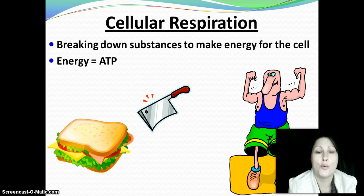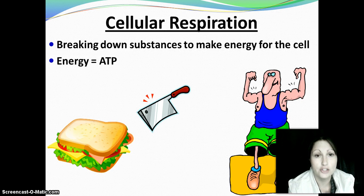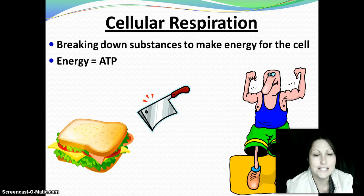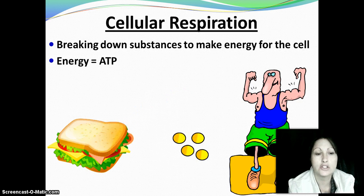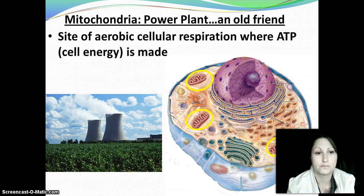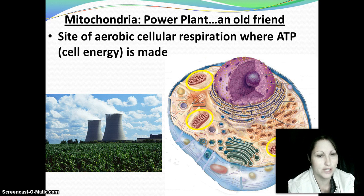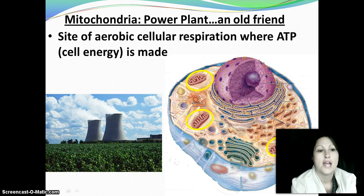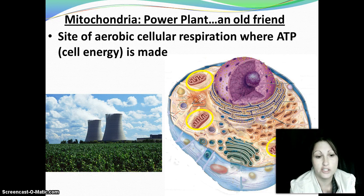The whole point of cellular respiration is to take the things that we eat and break them down to make energy so that our cell can do work. Any time we talk about cell energy, we're going to talk about ATP, which is adenosine triphosphate. Everything that you eat, your cell uses to have energy to perform work. In our cell parts lecture, we talked about the mitochondria — the power plant of the cell. These are the little kidney bean-looking organelles in the cell, and they're the site of aerobic cellular respiration, where the energy is going to be made.